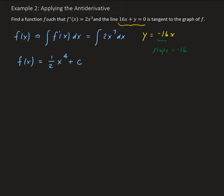From here we set the derivative equal to minus 16, which allows us to solve for x. Dividing both sides by 2 and then taking the cube root of both sides, we get x cubed equals negative 8. Taking the cube root of both sides, we get x equals minus 2.